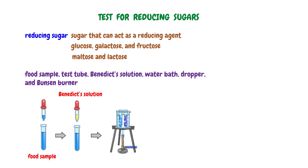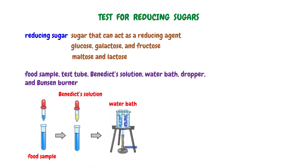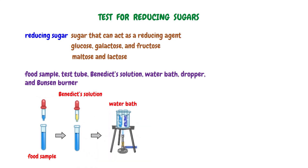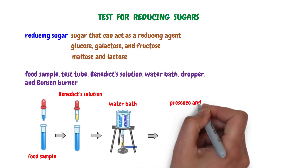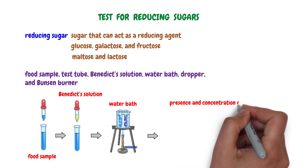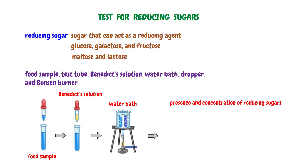Carefully heat the test tube in a water bath using a Bunsen burner or hot plate. Maintain the heating for about 5 minutes. The heat is crucial for the reaction between reducing sugars and Benedict's solution. After heating, carefully observe the color change in the solution. The color change indicates the presence and concentration of reducing sugars in the food sample.